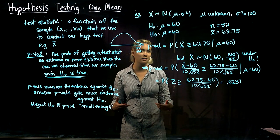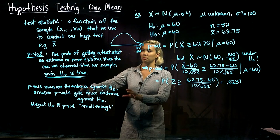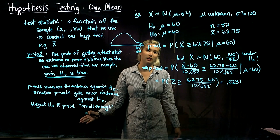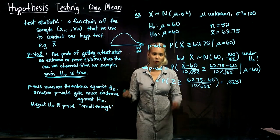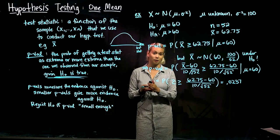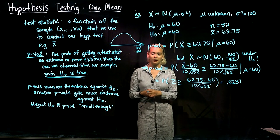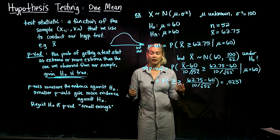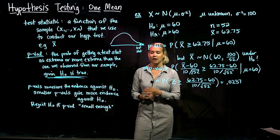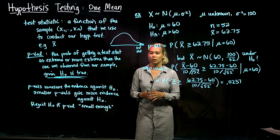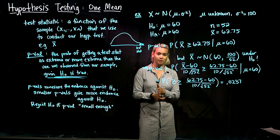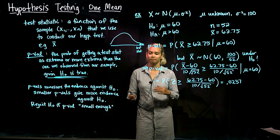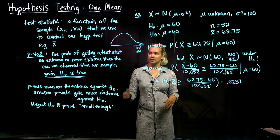When we see a small p-value, we know we're going to want to reject the null hypothesis. We calculate the p-value based on our test statistic, and then we reject the null hypothesis if our p-value is smaller than some predetermined threshold — the significance level alpha.